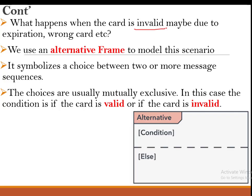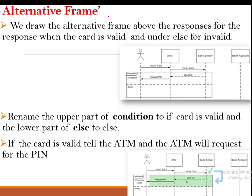When the card is invalid — perhaps it is expired or belongs to a different bank — we use what we refer to as an alternative frame to model that scenario. An alternative frame is used when a condition requires a choice between two or more message sequences. The choices must be mutually exclusive: one action is taken if the condition is true, another if it is false. When the condition is valid, the topmost part executes; when false, the bottom part executes.